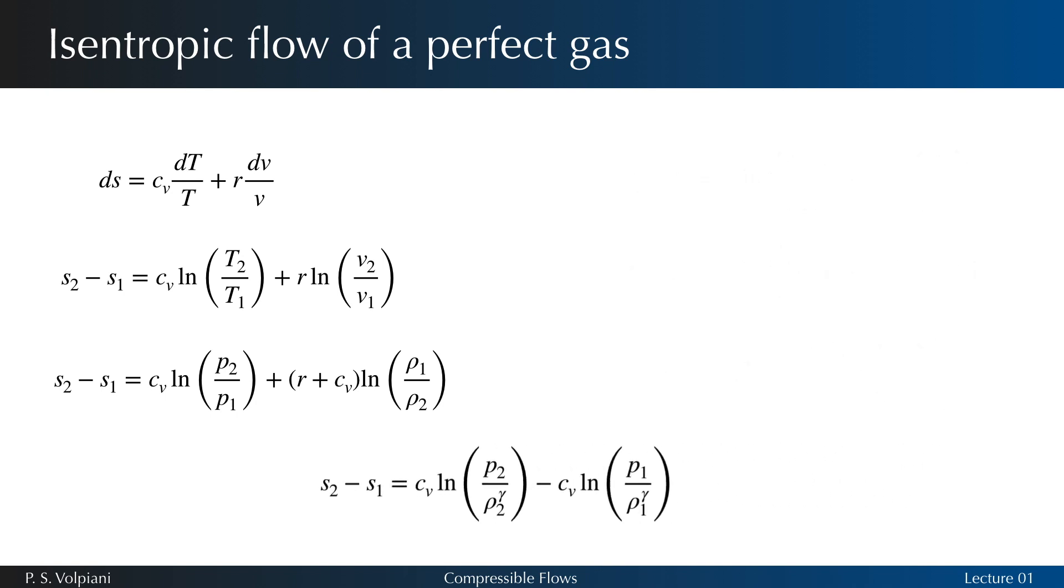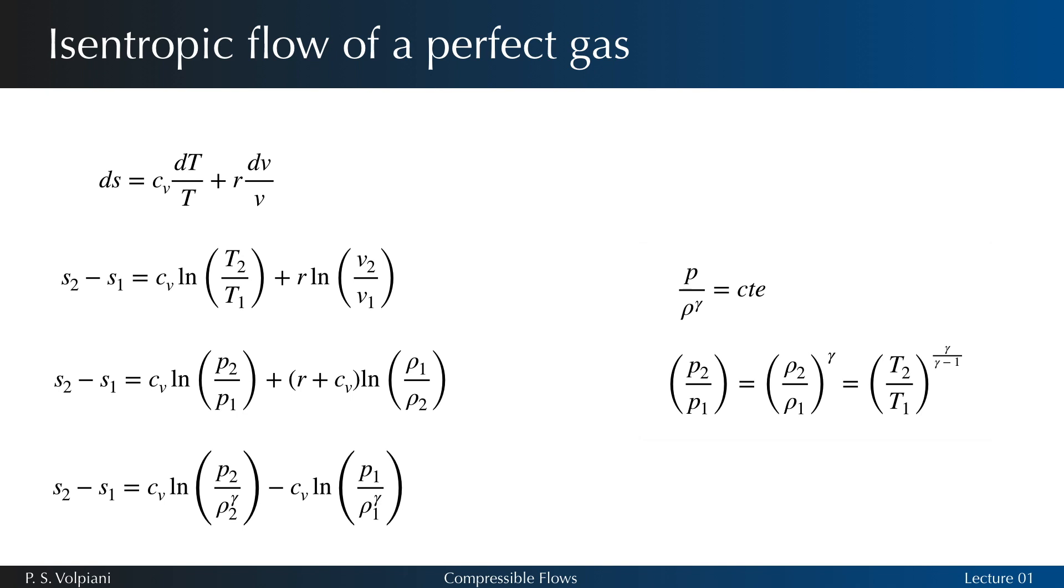An isentropic flow of perfect gas is therefore such that p/ρ^γ = constant, leading to the final equation.